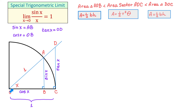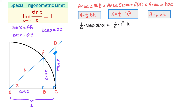In triangle AOB, the base is cosine of x and the height is sine of x, so its area is one-half times cosine(x) times sine(x). For the sector, we replace R with 1 and theta with x, giving one-half times 1 squared times x. In triangle DOC, the base is 1 and the height is tangent of x, so its area is one-half times 1 times tangent(x). Now we have a compound inequality.